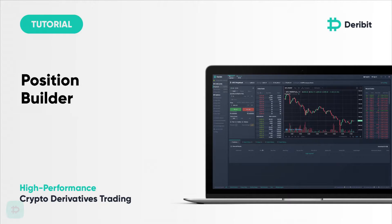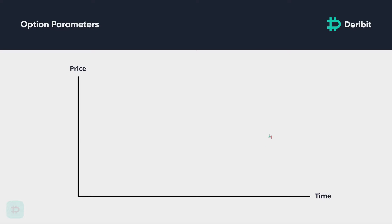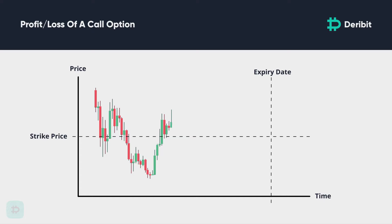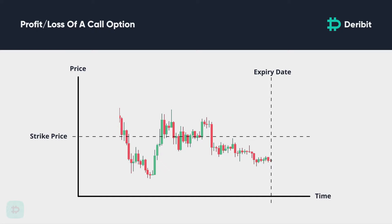This video is about the first of the two types: the call option. A call option is the right to buy the underlying asset at the strike price on the expiry date. Let's go through the profit and loss of a Bitcoin call option. For a call option, if the underlying price expires below the strike price, then the option expires out of the money and therefore worthless. The buyer's only loss is the premium paid to purchase this contract, and of course the buyer's loss is the seller's profit.